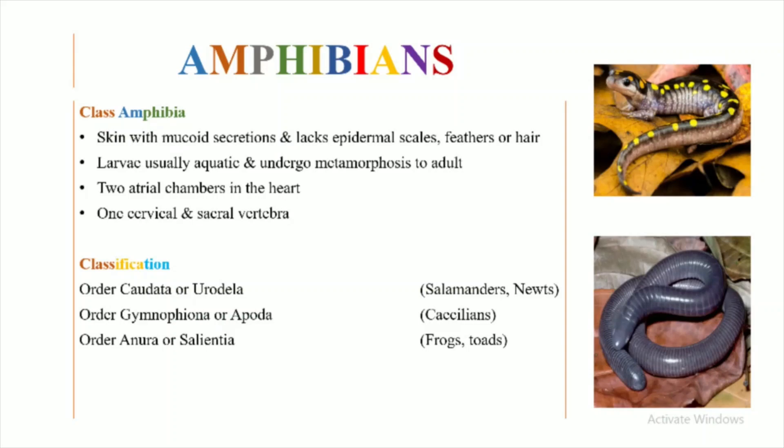Their heart has two atrial chambers, which means that they have a three-chambered heart. They possess one cervical and one sacral vertebra. The cervical vertebra is the neck vertebra whereas the sacral vertebra is the tail vertebra.